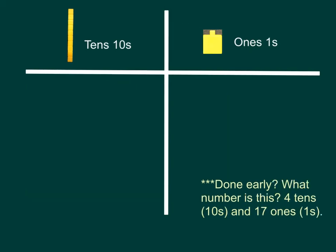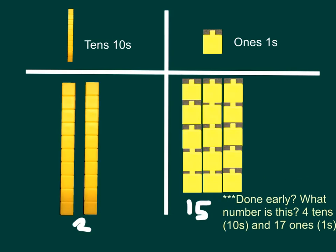Let's try another. On your boards, place two longs or two tens and fifteen ones or fifteen units. I want you to think about what number is shown or represented by these tens and ones. Done early? What number is this? Four tens and seventeen ones. Pause video now.